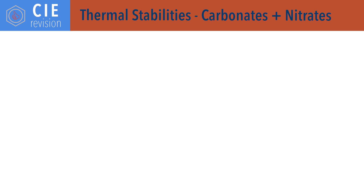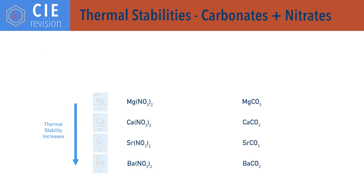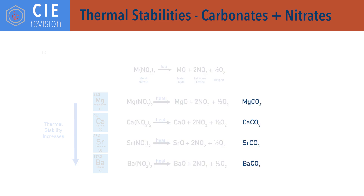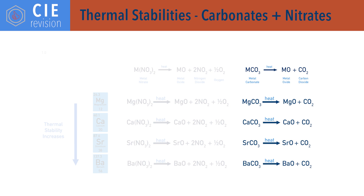The thermal stability of group 2 metal nitrates and carbonates increases down the group — it gets harder to break them down with heat. Group 2 metal nitrates M(NO₃)₂ break down into a metal oxide, nitrogen dioxide, and oxygen when heated; both the starting nitrate and the metal oxide formed are white solids, with nitrogen dioxide being a brown gas. Metal carbonates (MCO₃) break down into a metal oxide and carbon dioxide when heated: MCO₃ → MO + CO₂. Both the starting carbonate and metal oxide are white solids, with carbon dioxide being a colourless gas.